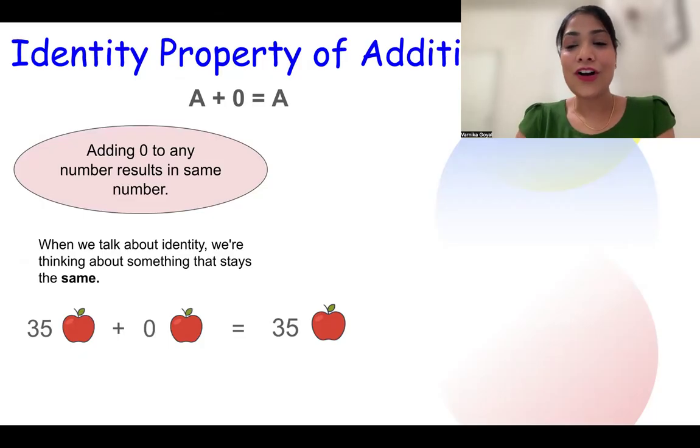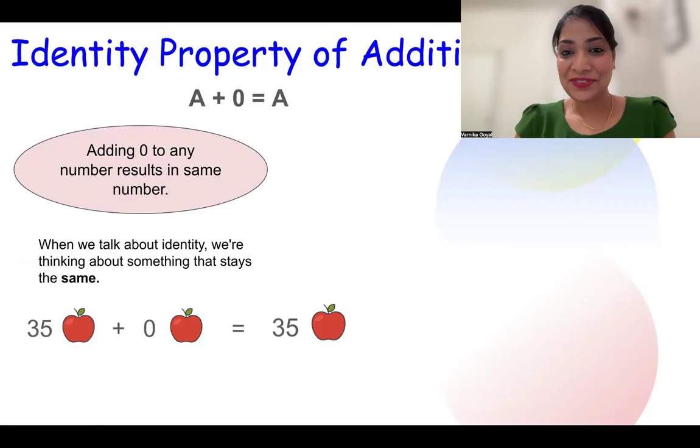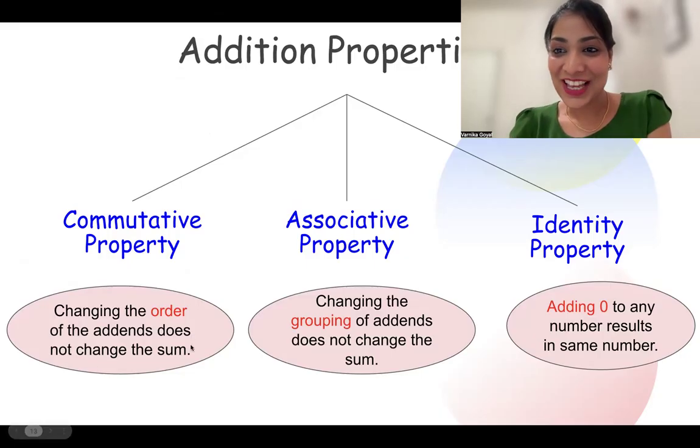Now you have mastered all your properties of addition. It's trivia time. Let's see. But before we do the trivia, let's revise one more time. So three properties of addition are commutative property, which means changing the order of addends does not change our sum. Associative property, meaning changing the grouping of addends does not change our sum. Third, identity property: adding zero to any number results in the same number. Now let's go.